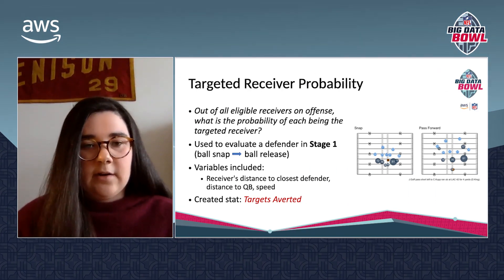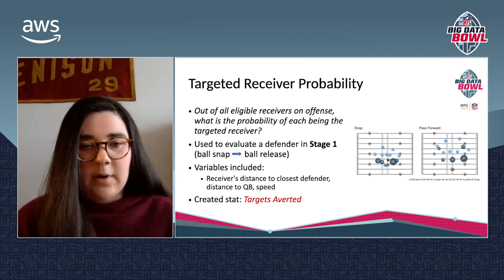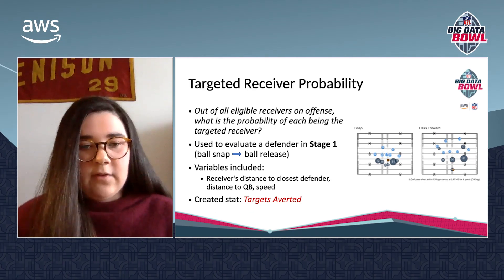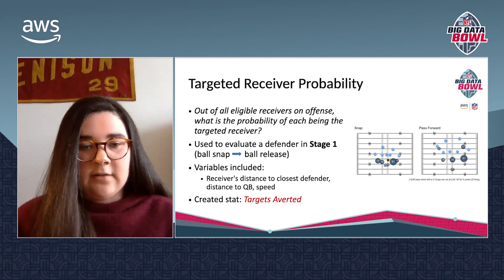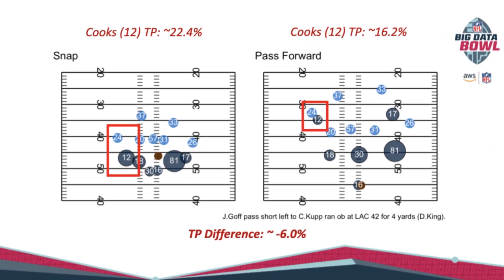Getting into targeted receiver probability, which basically asks: out of all receivers on offense, what is the probability of each being targeted? This can be used to evaluate a defender in the first stage of a passing play, from snap to ball release. The variables I included in the model were the receiver's distance to the closest defender, the distance to the quarterback, and the speed of each the receiver and their closest defender. As an example, looking at number 12 in dark blue, Brandon Cooks, being covered by number 24 in light blue, Trevor Williams.